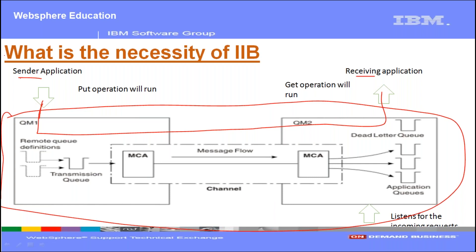Now let's see what is the necessity of IIB when we already have MQ. With MQ we can successfully transport messages from one application to another. But why do we need another technology called IBM Integration Bus? Although MQ has the capability of transporting messages from source to destination, there is a limitation. For example, if a sender application can generate and understand only HTML type messages—